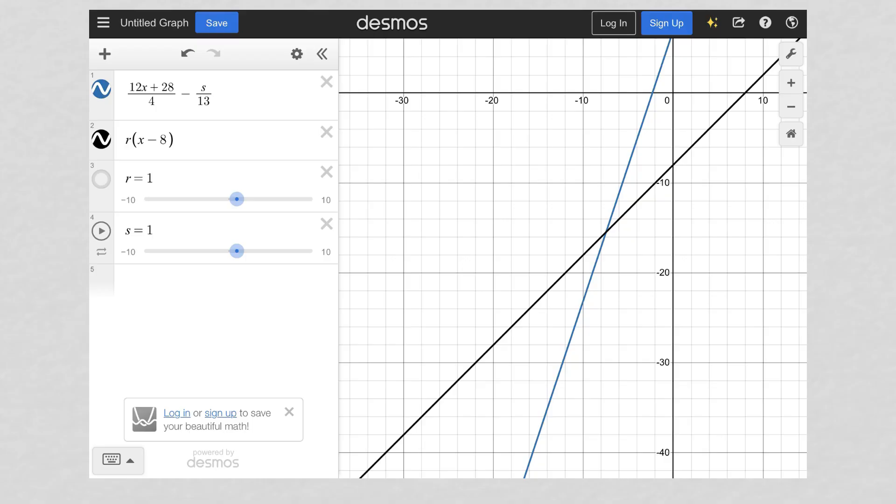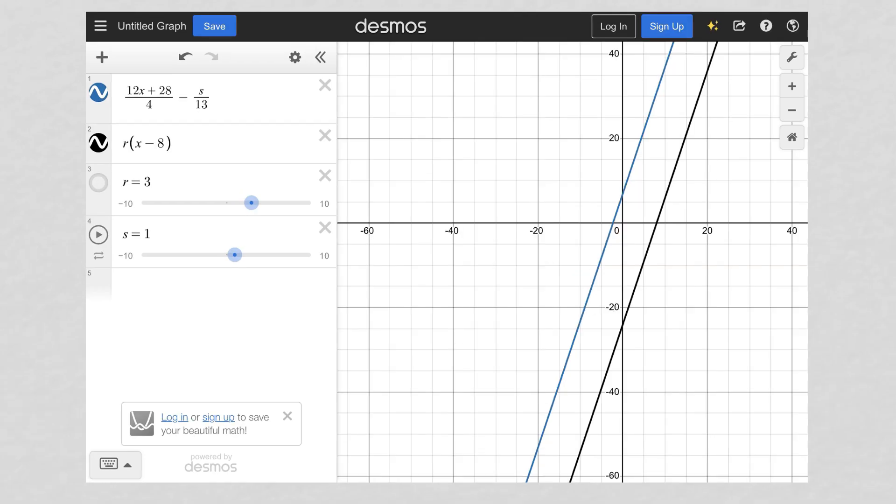We were also told that our S values are greater than zero. So you can see here, I first of all decided to think about, well, the infinitely many solutions means they have to overlap. So I want my blue line and black lines to be parallel to start. So I slid my R, which initially was at one. That's like the default.